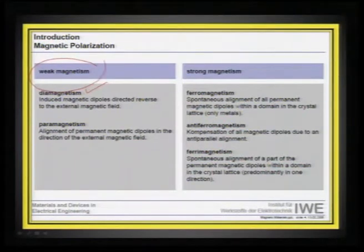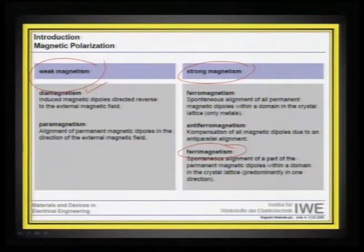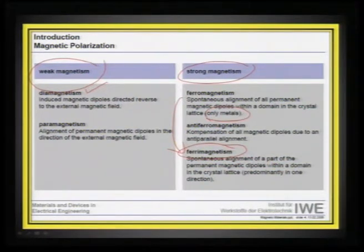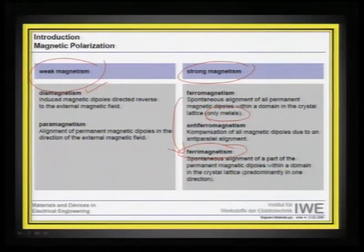Strong magnetic response comes from ferromagnetism, antiferromagnetism, or ferrimagnetism. Ferrimagnetism is essentially ferromagnetism with some antiferromagnetically aligned moments that are compensated by strong ferromagnetism. Ferromagnetism is mainly seen in metals, and there are very few other compounds that qualify as ferromagnetic materials, whereas ferrimagnetism can be observed in non-metals as well, and we will look at some categories in the next few slides.